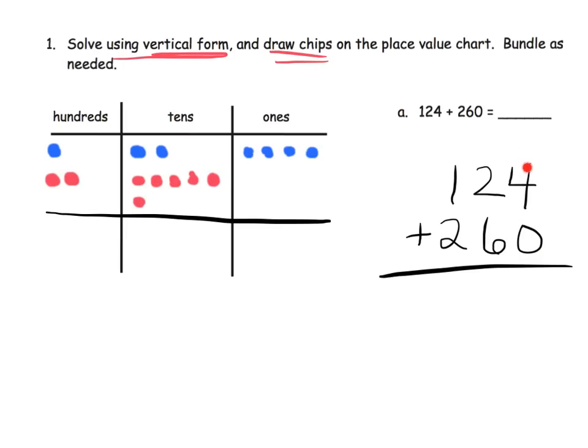So let's take a look at this. The ones column, 4 ones plus 0 ones gives us, well, let's do it in green, gives us 4 in the ones column. And then 2 tens plus 6 tens gives us 8 tens. So we're going to have 8 in the tens column. And then 100 plus 2 hundreds gives us 3 hundreds in the hundreds column.